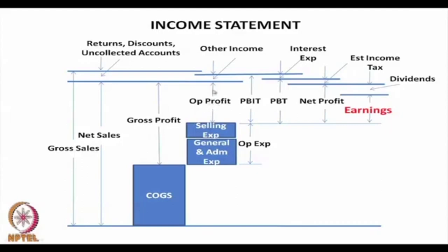On operating profit, we add income from various other sources. The company might have invested idle cash in other companies — that is not part of its own operations, but it is income from other investments. Adding this to operating profit gives profit before interest and taxes. If we subtract the interest expense, we get profit before tax, and then subtracting the estimated income tax, we get profit after tax, also known as net profit.